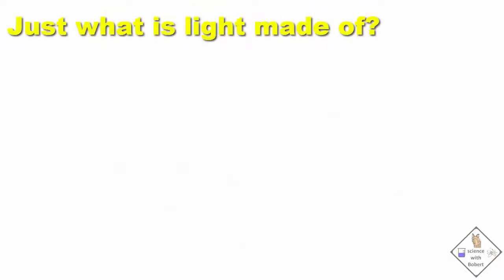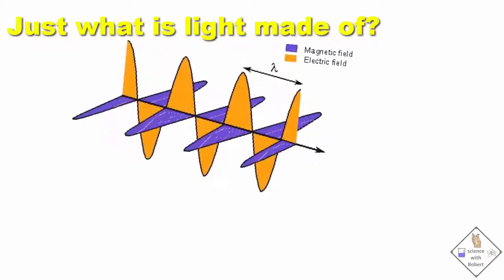Just what is light made of? All light consists of two oscillating waves that are perpendicular to each other. One of the waves is an oscillating magnetic field, and the other is an oscillating electric field. If we are going to build a cell phone signal blocker, we need to find something that will block these fields.